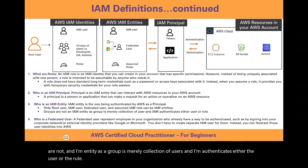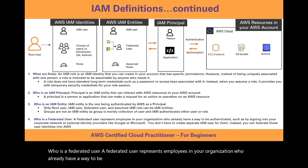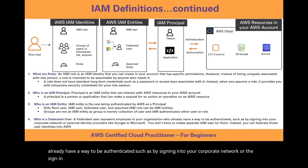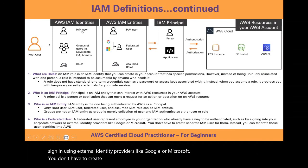A federated user represents employees in your organization who already have a way to be authenticated, such as by signing into your corporate network, or they sign in using external identity providers like Google or Microsoft. You don't have to create separate IAM users for them. Instead, you can federate those user identities into AWS.